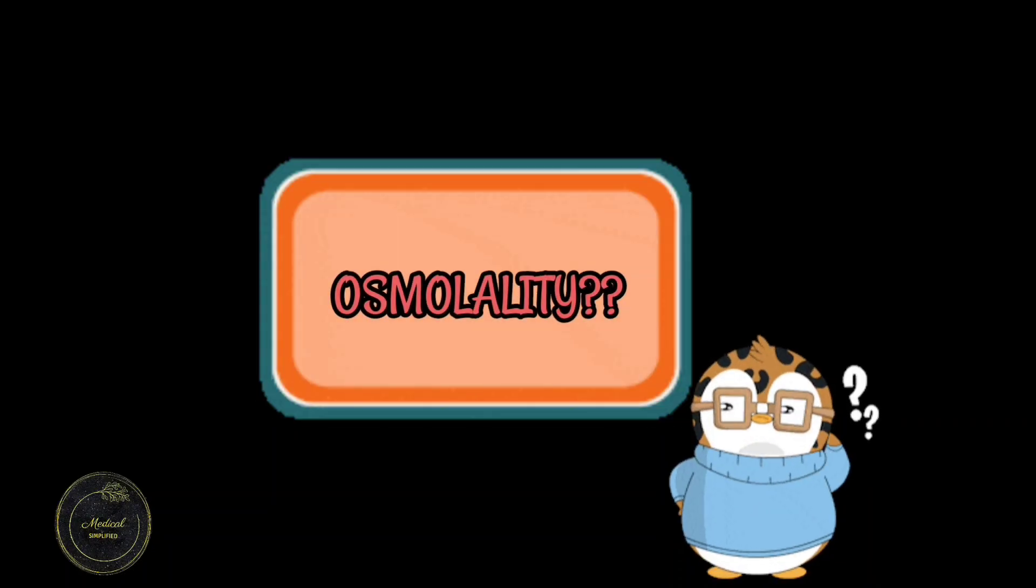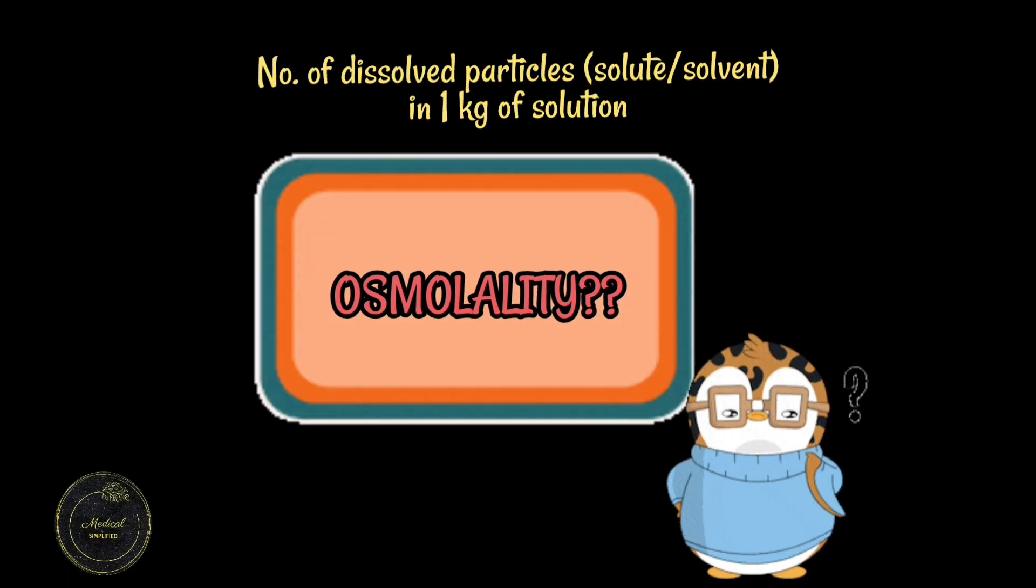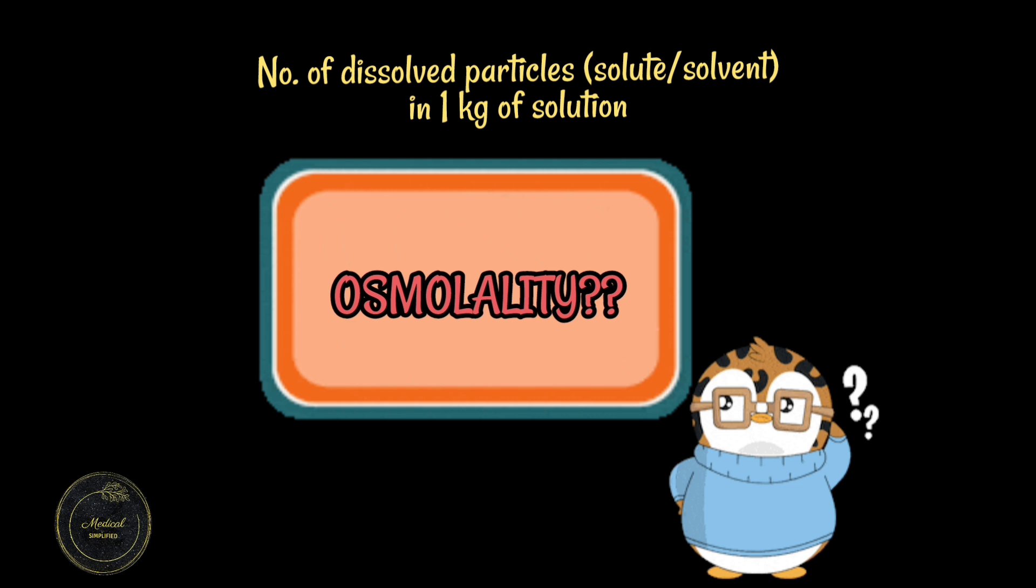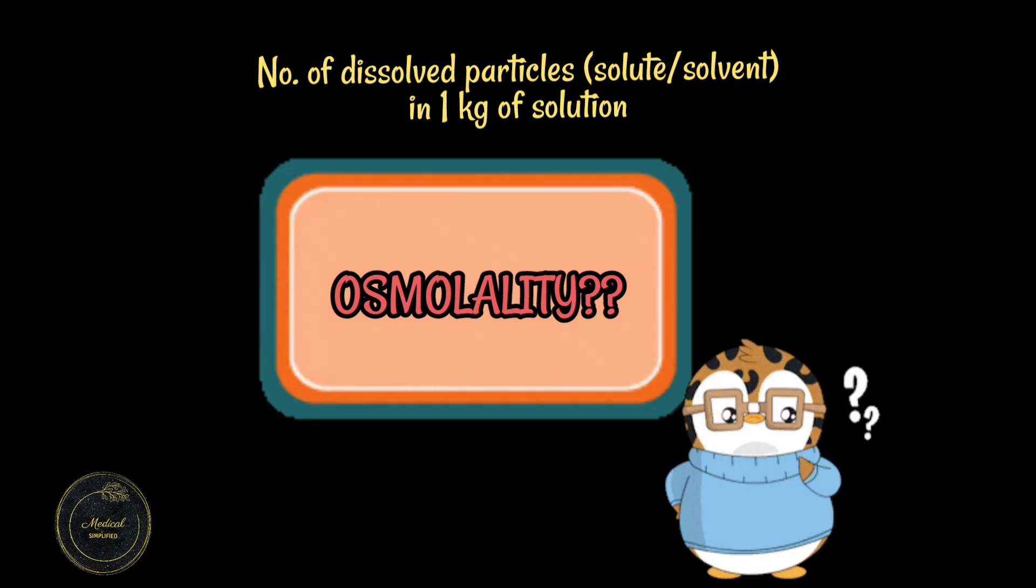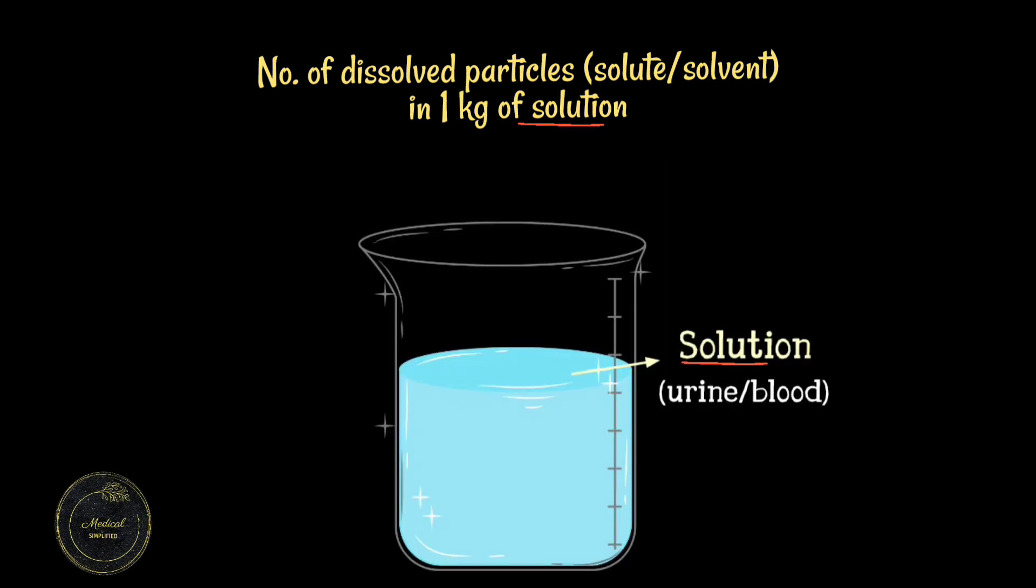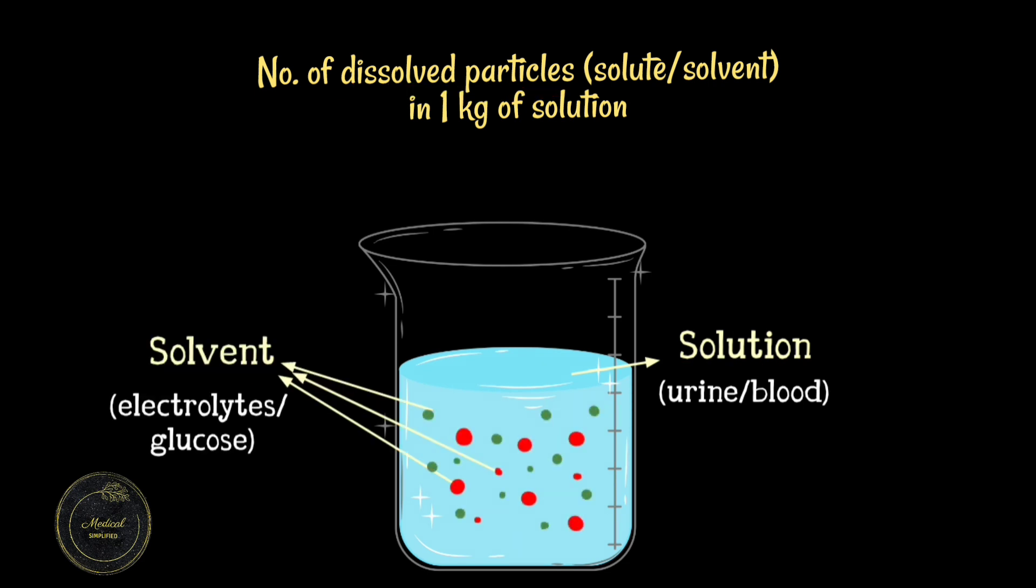In simple words, remember osmolality is the number of dissolved particles in 1 kg of a solution. Here our solution will be blood or urine and the solutes or dissolved particles are the electrolytes, the proteins, the glucose which may be found in the blood or urine.